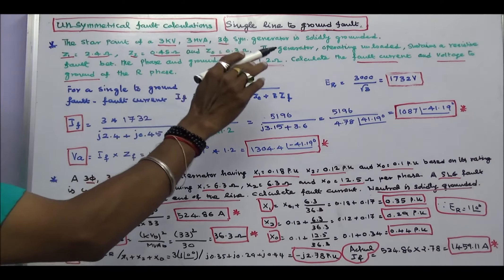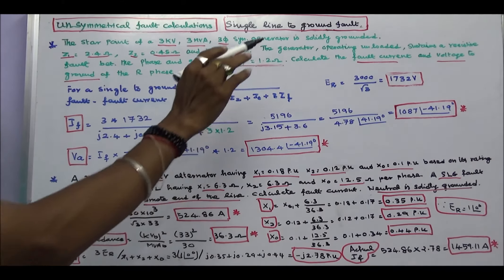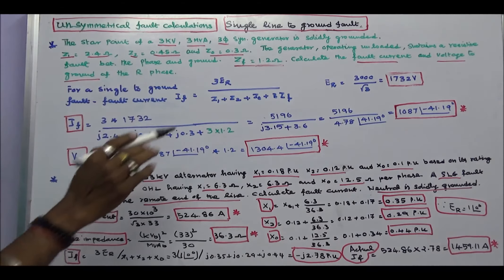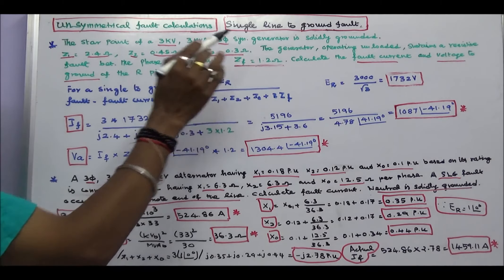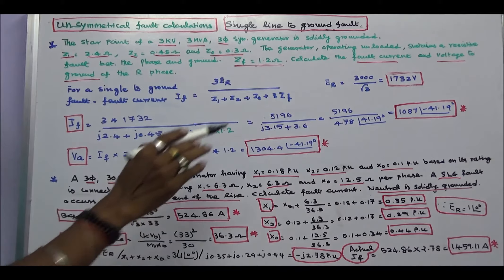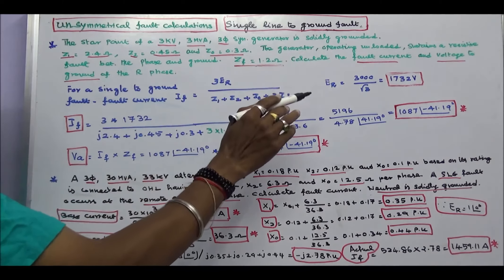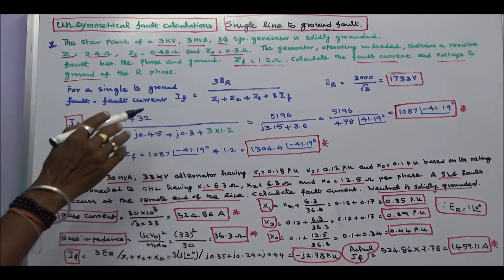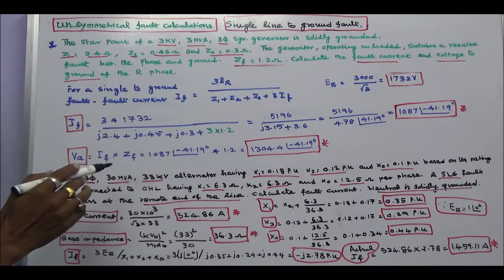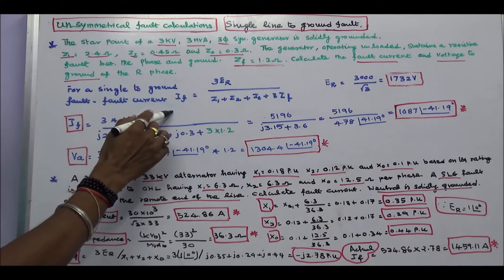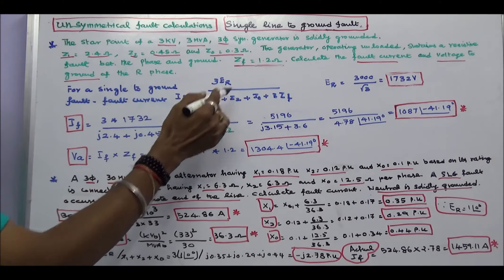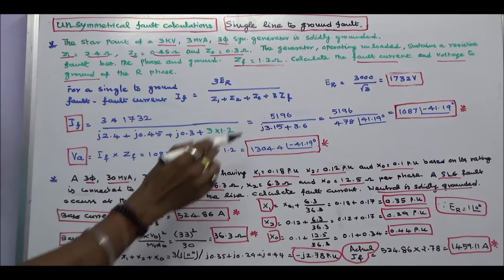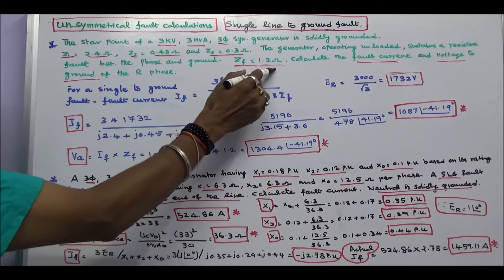The generator operating unloaded sustains a resistive fault between the phase and the ground. Zf is equal to 1.2 ohms. The question is calculate the fault current and voltage to ground of the R phase. We know that for a single end ground fault, fault current IF is equal to 3 into ER divided by Z1 plus Z2 plus Z0 plus 3 into Zf. Here Zf is equal to 1.2 ohms.